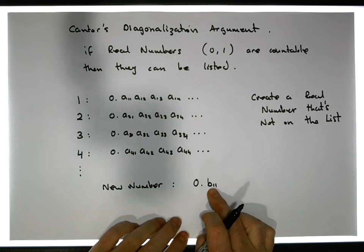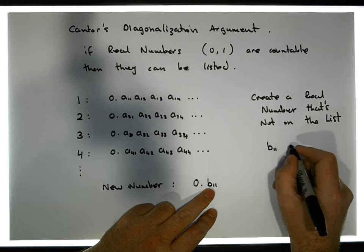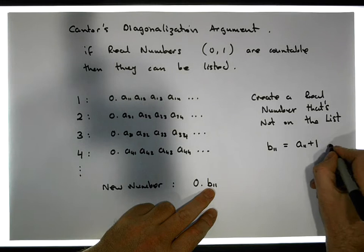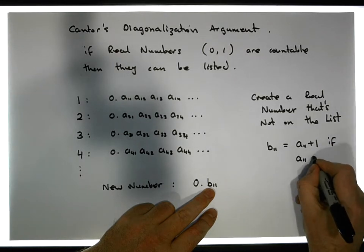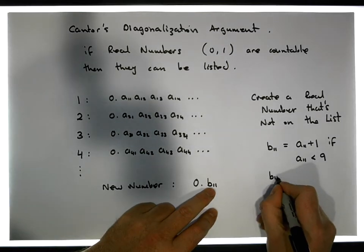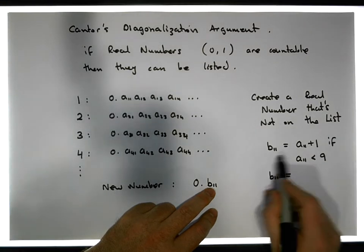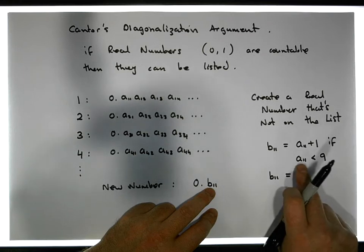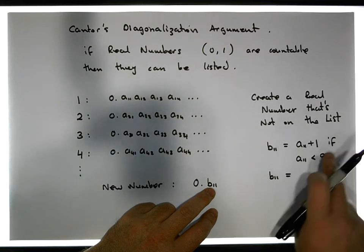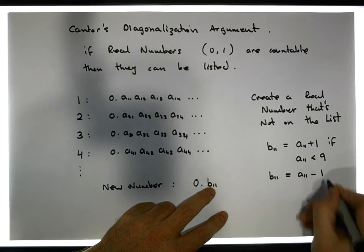Now what value is B11 going to have? Well, B11 is going to be equal to A11 plus one, if A11 is less than nine — meaning A11 is one of the digits from zero to eight, we just add one onto it. Otherwise, if A11 is equal to nine, we take one away from it.